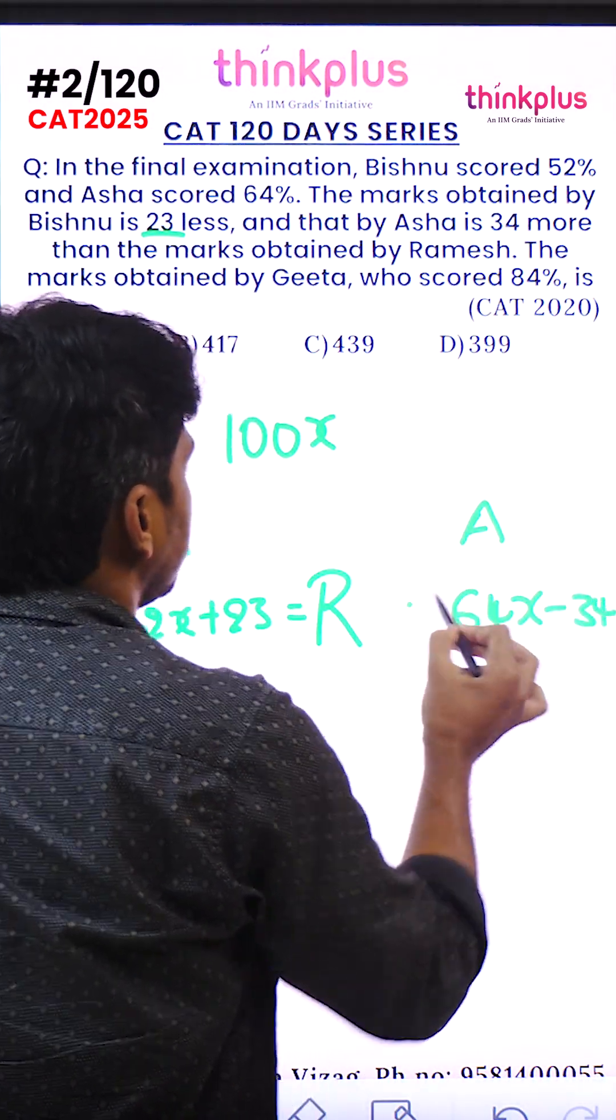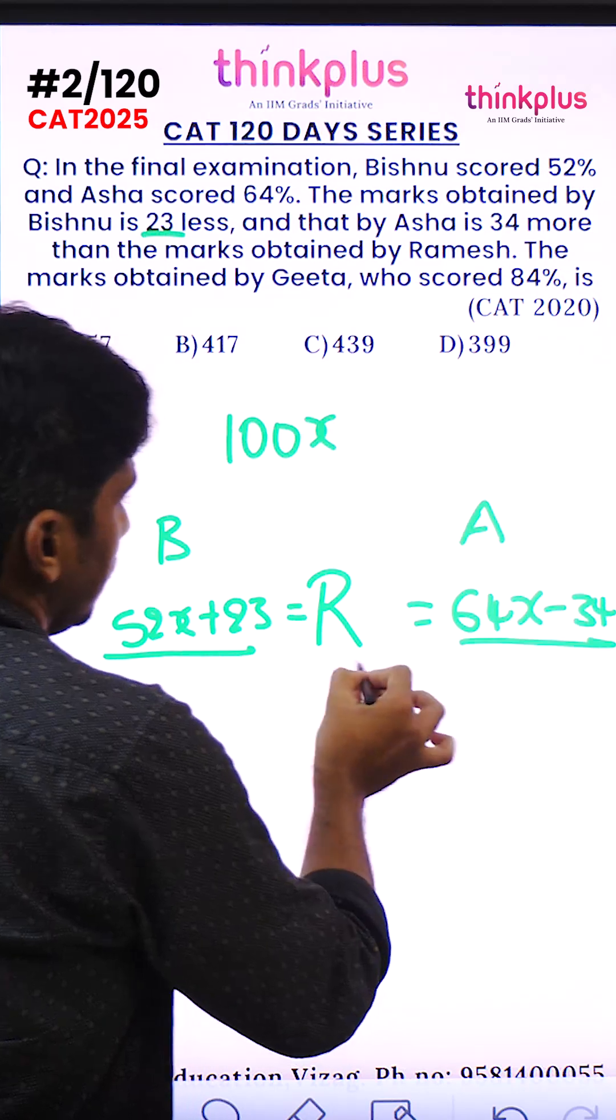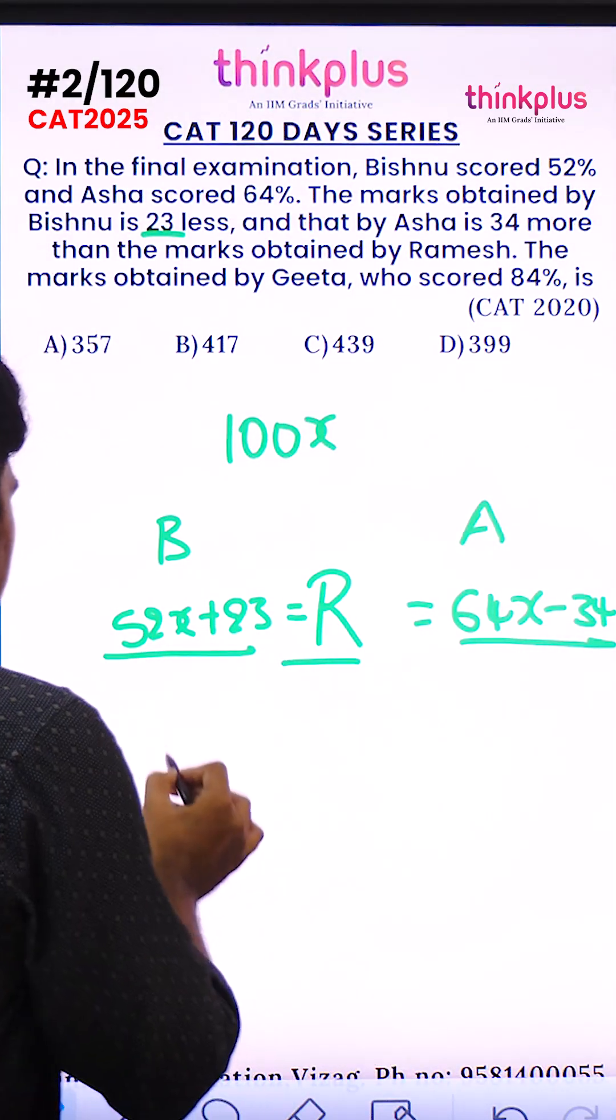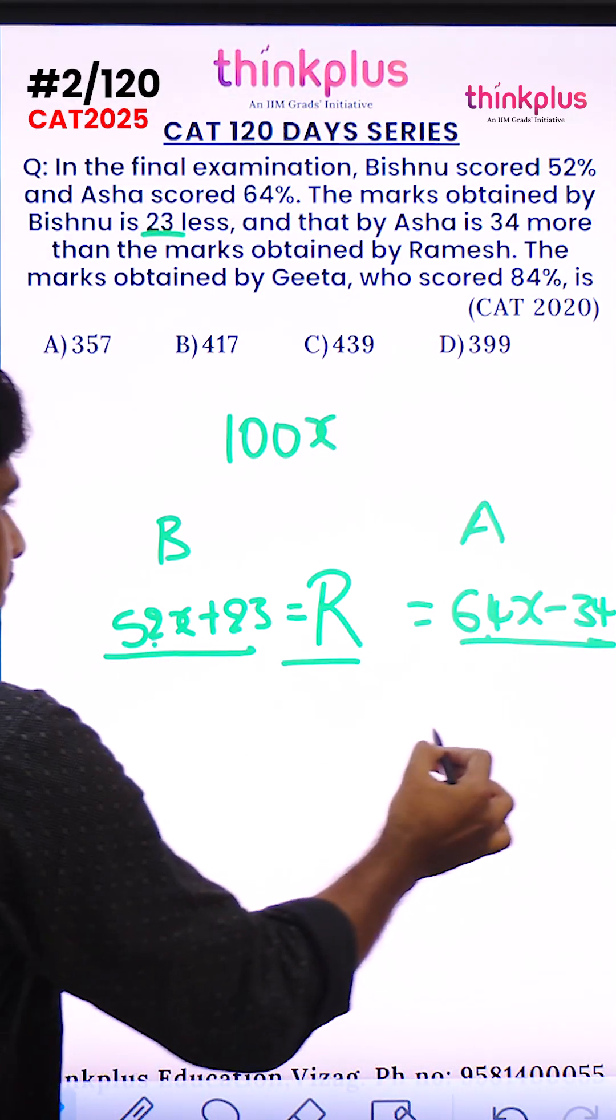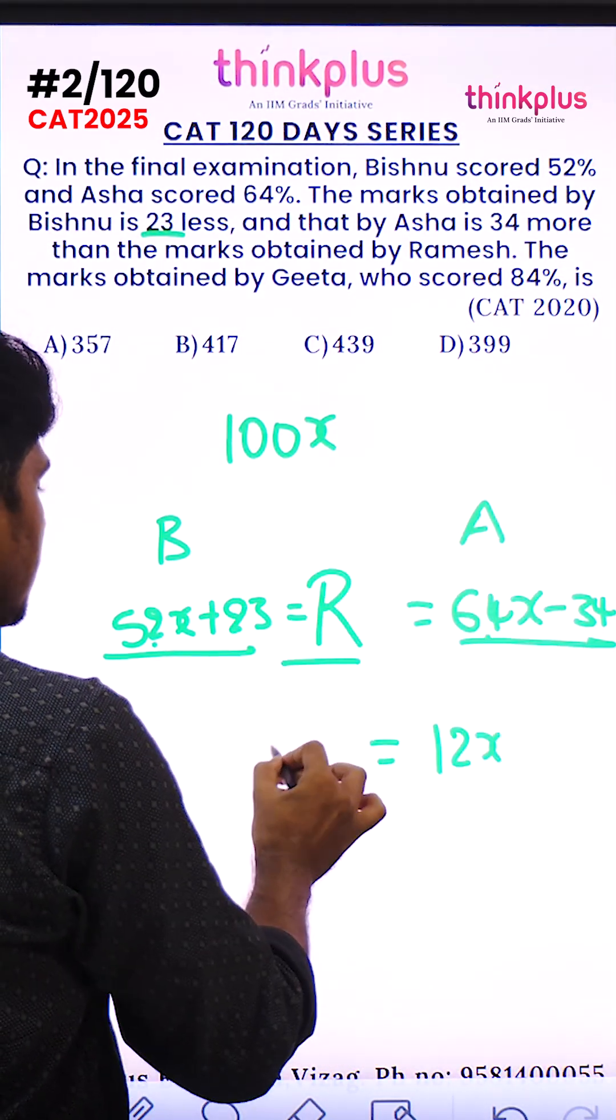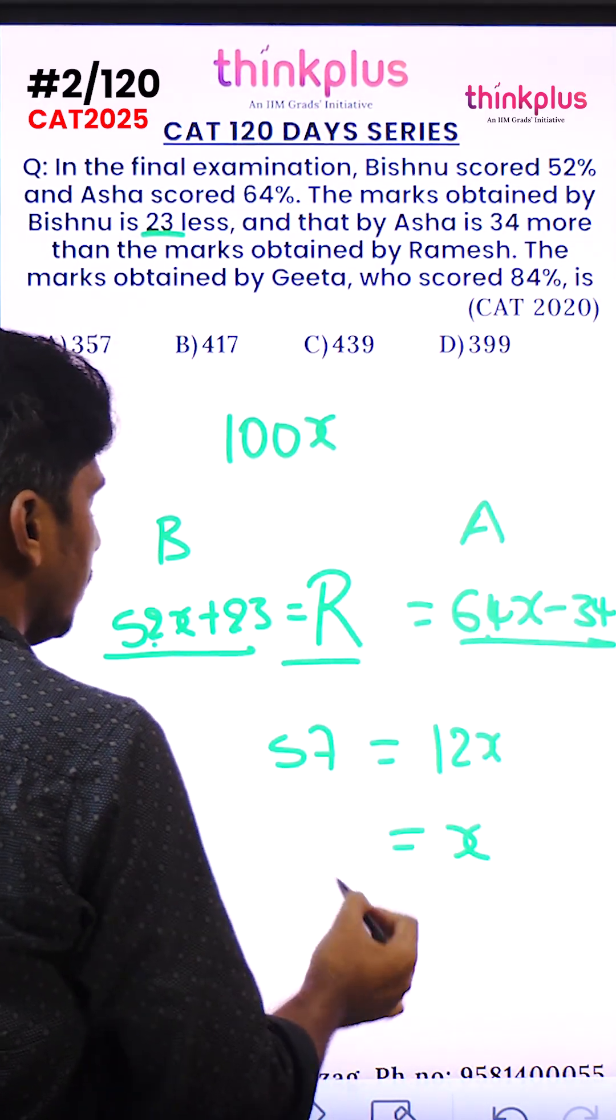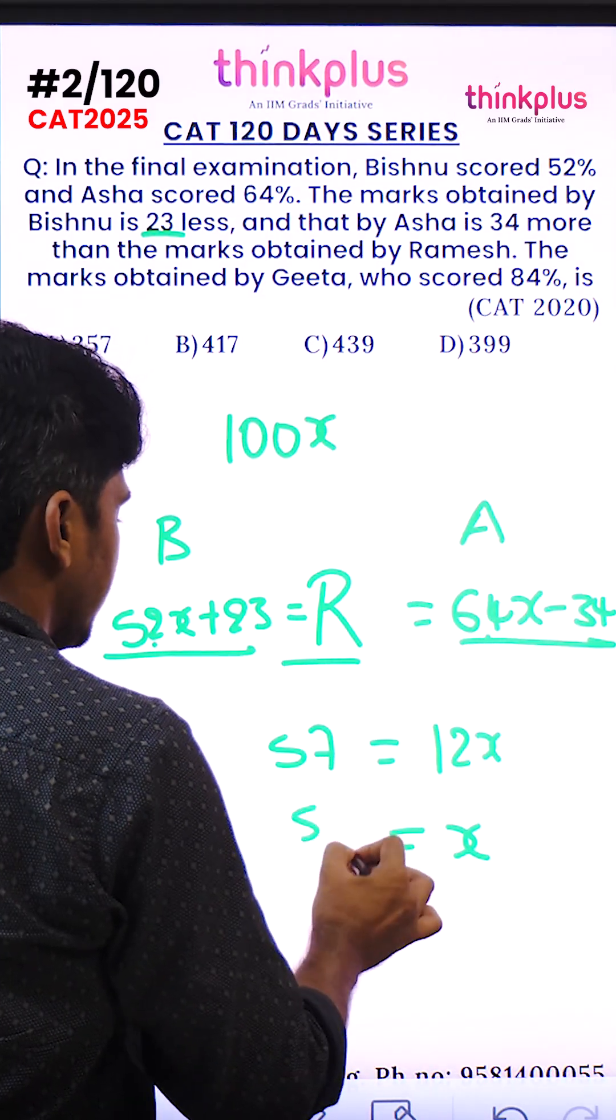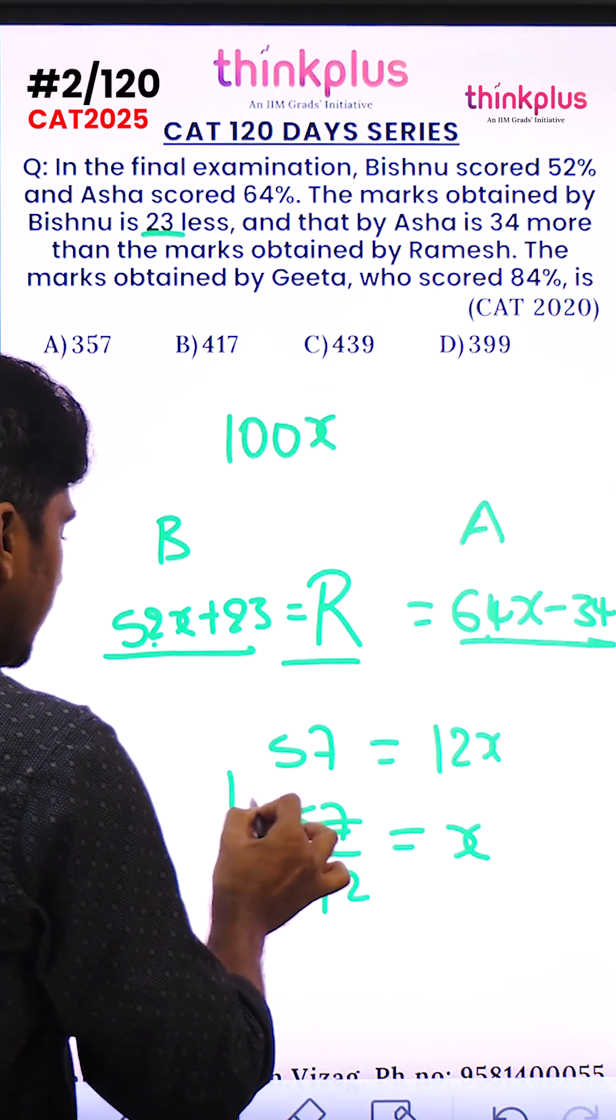Setting up the equation: 52x plus 23 equals 64x minus 34. This gives us 12x equals 57, so x equals 57 divided by 12. Simplifying, we get x = 19/4.